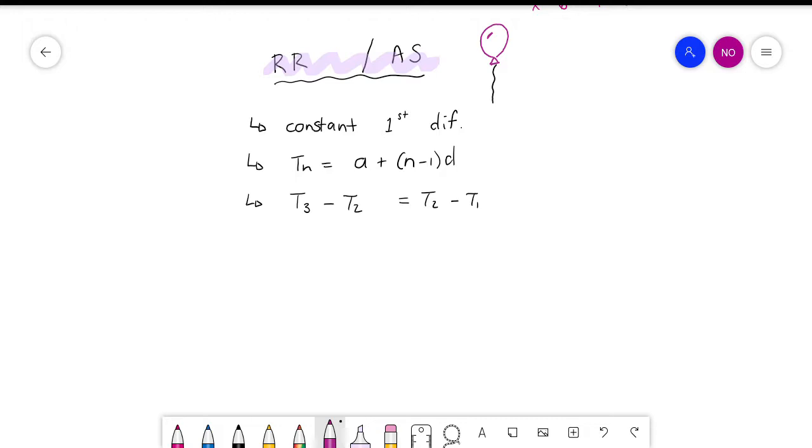We've also said that you can get the general formula using the a plus n minus 1 times d. And then we've said that T3 minus T2 equal to T2 minus T1 can be helpful in some cases.